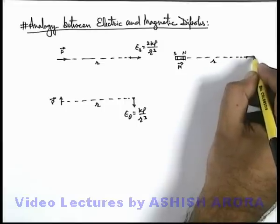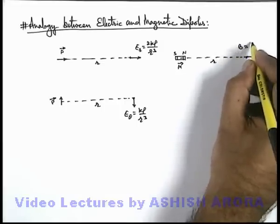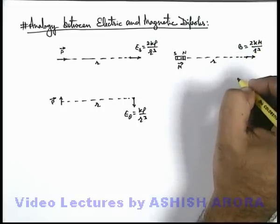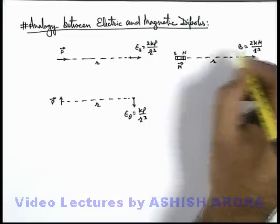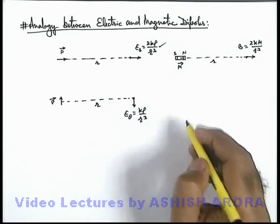Here the magnetic induction will exist in radial direction and the magnitude we can directly write as 2km/r³, which we have recently calculated in the previous section, which is exactly same as that of the electric field here.